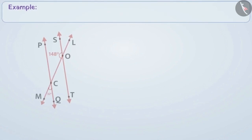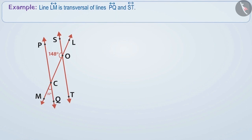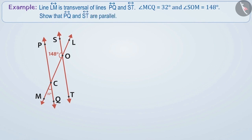Next example. Line LM is a transversal of line PQ and line ST. Angle MCQ is equal to 32 degrees and angle SOM is equal to 148 degrees. Show that line PQ and line ST are parallel. Here we see that angle MCQ and angle LCP are vertically opposite angles. Therefore they will be equal. That is, angle MCQ is equal to angle LCP is equal to 32 degrees.